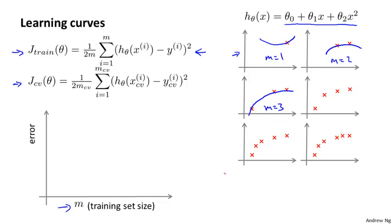By the way, if I have a large training set and I'm artificially restricting the size of my training set in order to plot J_train, if I set m equals three and train on only three examples, then I'm going to measure my training error only on the three examples that I actually fit my data to — not on all the other examples that I had deliberately omitted from the training process.